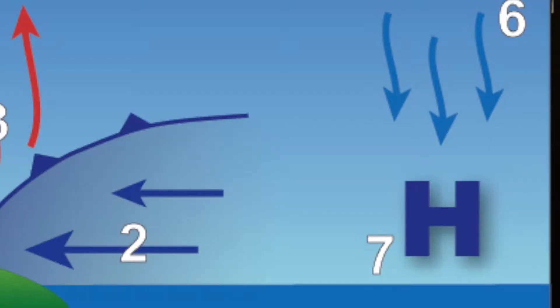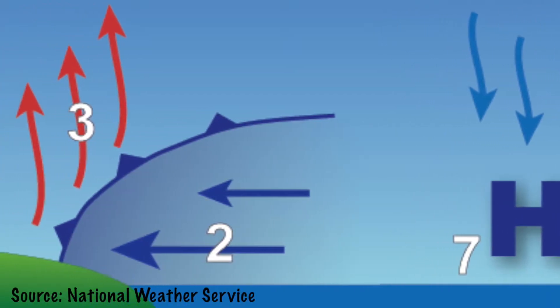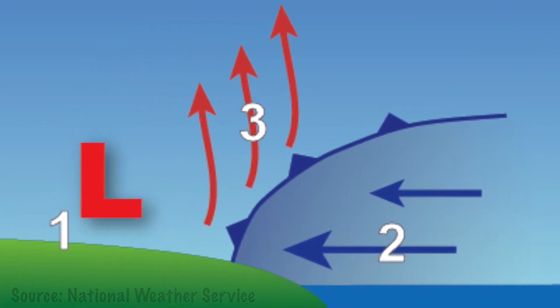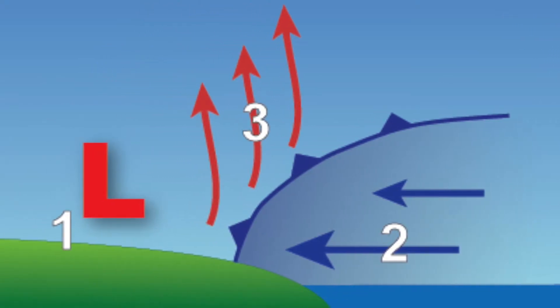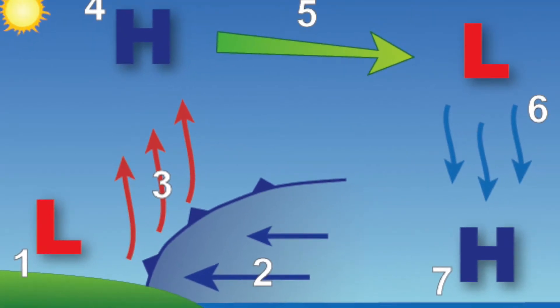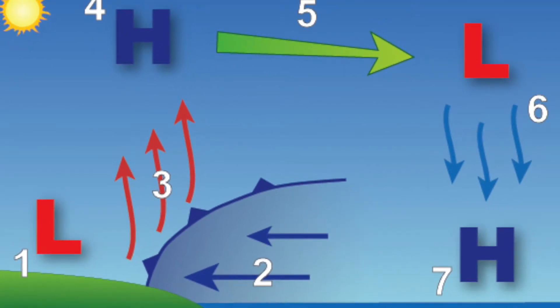It takes more energy to heat up the water compared to the land, so as the sun rises, the land heats up faster and the temperature rises quicker than the water. This difference in heating and temperature creates local areas of high and low pressure. The high pressure is over the cooler water, and the low pressure is over the warmer land.